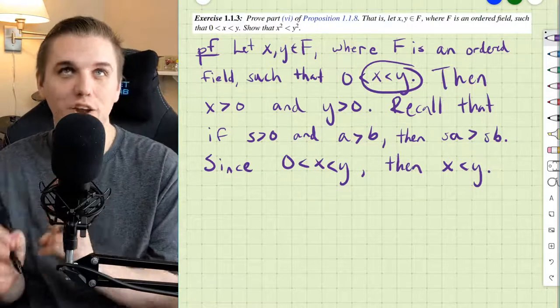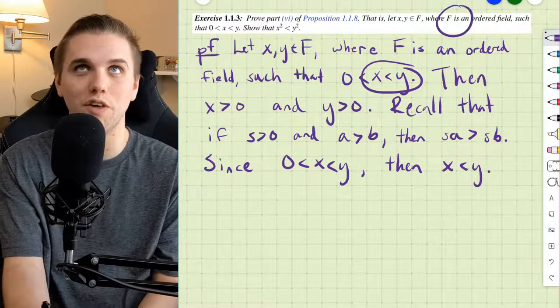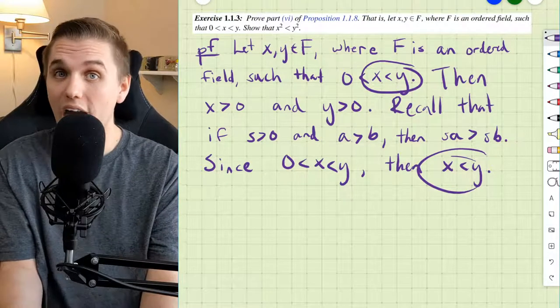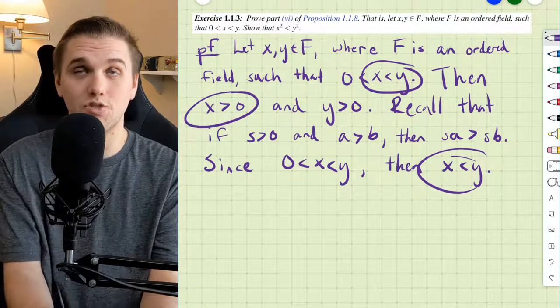And when I say number here, I mean element in my ordered field. Okay, so let's take this inequality and multiply both sides by x since x is greater than 0.